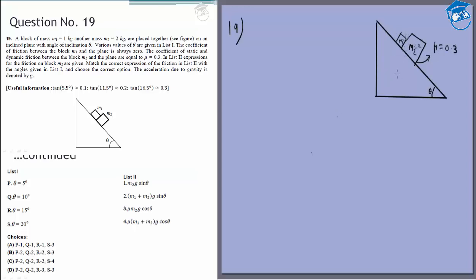First, let's find when slipping will just begin. The total frictional force on this combined system, which is μ m2 g cos θ, has to be equal to the total gravitational force, which is (m1 + m2) g sin θ.